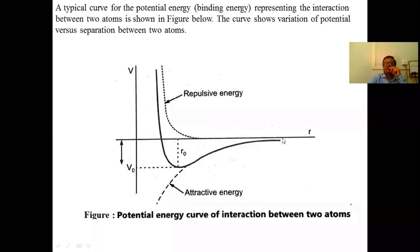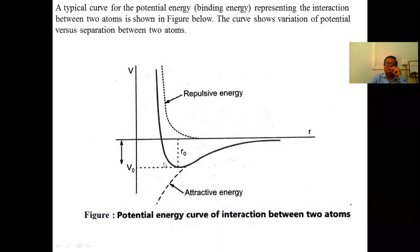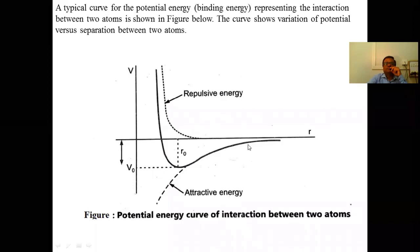If we decrease the distance below R₀, the potential energy increases very rapidly and becomes positive, indicating a repulsive force. If R is greater than R₀, the potential energy is negative, meaning there is an attractive force. This is called the binding energy curve, which is important in the formation of molecules.